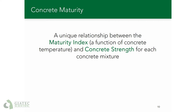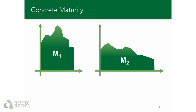In the maturity method, we have a concept called the maturity index. The maturity index, which is a function of concrete temperature, is correlated with the strength of concrete, and this relationship is unique to each concrete mixture. To clarify this concept, imagine the same concrete mix poured in two different conditions experiencing two different curing temperatures. If we calculate the maturity index in both cases and see that it reaches the same value — whether at earlier or later times — the concrete strength would be the same regardless of its temperature history.